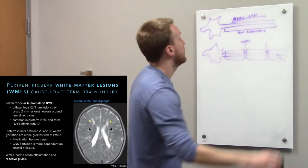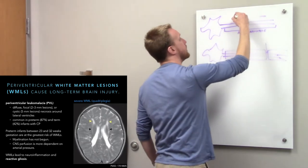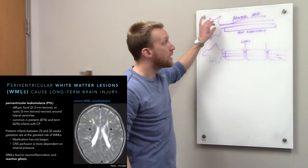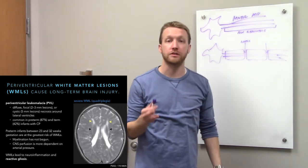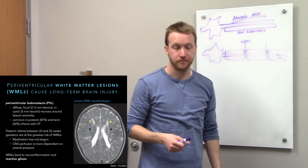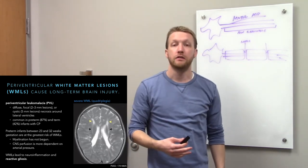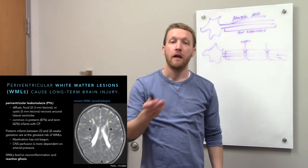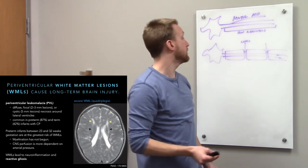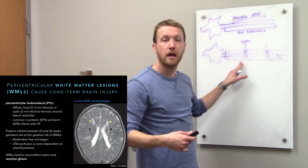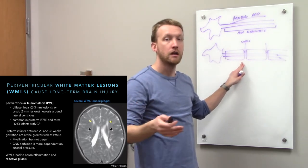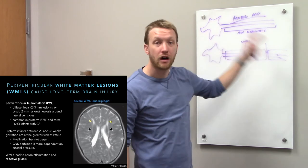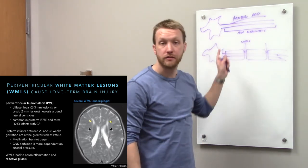Because unmyelinated axons require more ATP, they are far more susceptible to disruptions in blood flow. Abnormalities in placental formation or blood movement through the umbilical cord are therefore major risk factors for cerebral palsy. Early in development, a constant blood supply is even more critical than in adults. When neurons run out of ATP, they depolarize and experience excitotoxicity. The resulting white matter damage triggers inflammation and reactive gliosis, which further worsens injury.